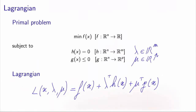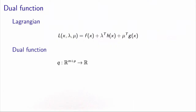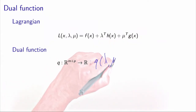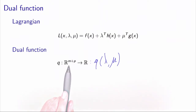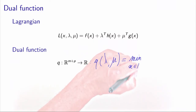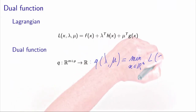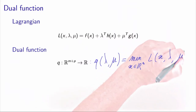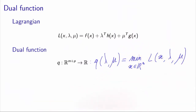As we have seen in the examples, for given values of lambda and mu we have a relaxed problem and we would like to minimize it with respect to x. What we obtain is the dual function. The dual function q maps the set of parameters lambda and mu — a vector of dimension m plus p — and it is the solution of the minimization problem associated with the Lagrangian at values lambda and mu. This is an unconstrained problem because we have moved all the constraints into the Lagrangian.